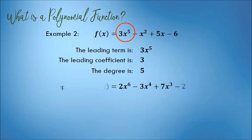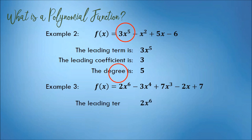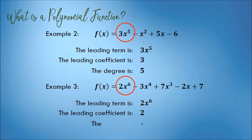One more example, we have this function: f(x) = 2x raised to 6, minus 3x raised to 4, plus 7x raised to 3, minus 2x, plus 7. This is a polynomial function because all exponents are positive integers. The leading term is 2x raised to 6, because it has the highest exponent. The leading coefficient is 2. The degree of this polynomial function is 6.